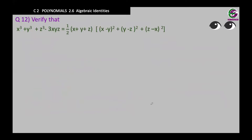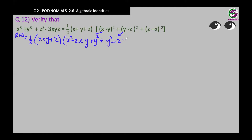Now question 12 is in the same form, but we have to verify. To verify, we always start from the bracket, so let's expand the right-hand side. RHS equals one-half times — in the first bracket we have nothing to do there directly, but in the second bracket: x minus y whole squared is x squared minus 2xy plus y squared, plus y minus z whole squared is y squared minus 2yz plus z squared, and z minus x whole squared is z squared minus 2zx plus x squared.